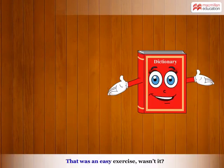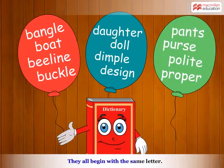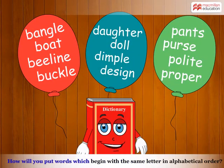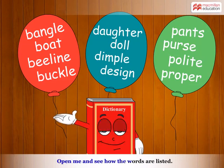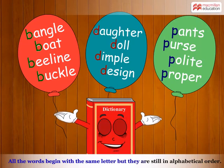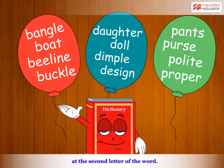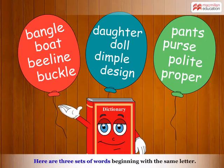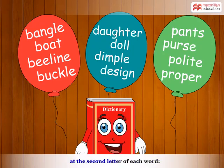That was an easy exercise, wasn't it? Now look at these lists of words. They all begin with the same letter. How will you put words which begin with the same letter in alphabetical order? Open me and see how the words are listed. All the words begin with the same letter but they are still in alphabetical order. You can put words into alphabetical order by looking at the second letter of the word. Here are three sets of words beginning with the same letter. Try and put each set in alphabetical order by looking at the second letter of each word.